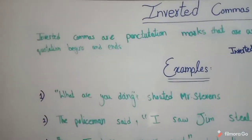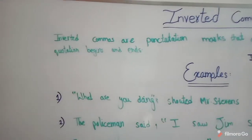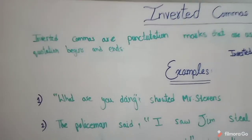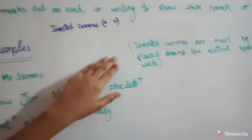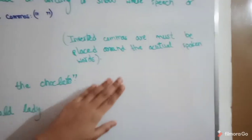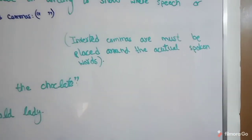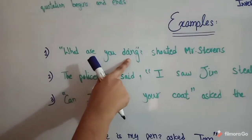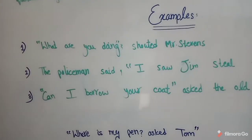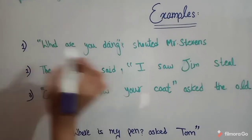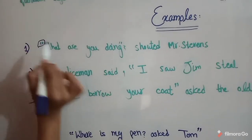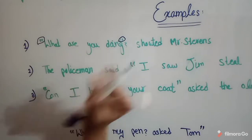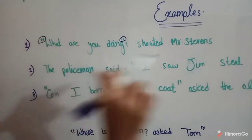If we want to take a short definition: inverted commas must be placed around the actual spoken words. Here I write three examples. The first one is: "What are you doing?" asked Mr. Stevens. These are the inverted commas, and these are the actual words of Mr. Stevens.